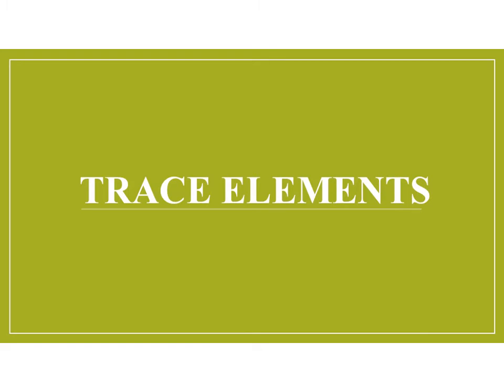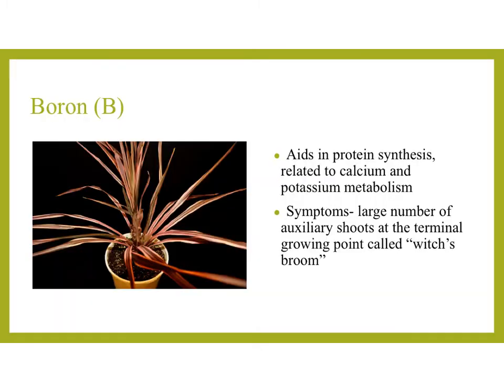Next we'll cover the trace elements — these are important to a plant but not needed in large quantities; just a small trace. Boron aids in protein synthesis and is related to calcium and potassium metabolism for the plant. A boron deficiency will cause a large number of axillary shoots at the terminal growing point, creating what they call a witch's broom. This makes it very ineffective at getting enough water up the plant when so many shoots are growing from that terminal bud.